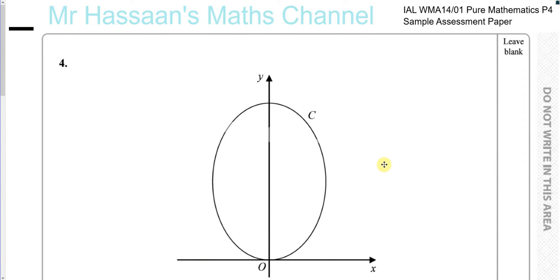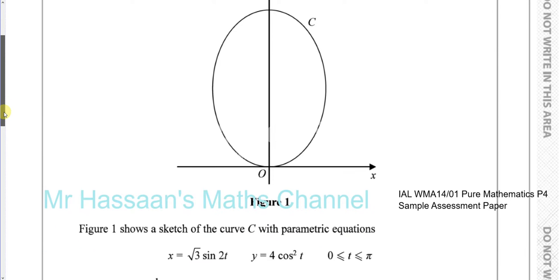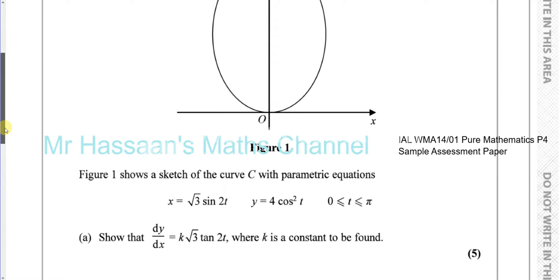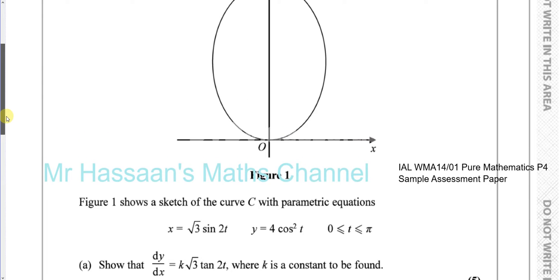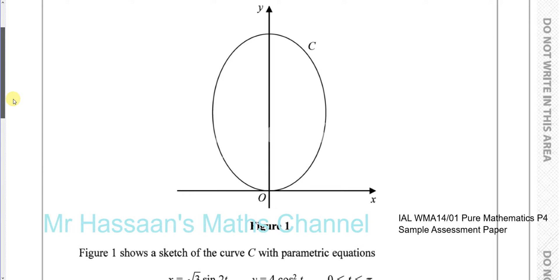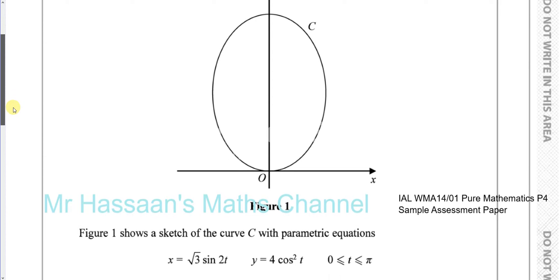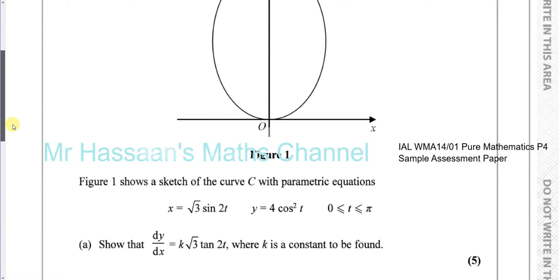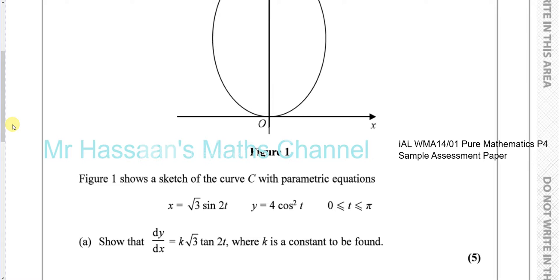Now for question number 4 from this P4 Pure Mathematics for International A-Level paper. Here we have a question about parametric equations. Figure 1 shows the sketch of the curve C with parametric equations x equals root 3 sine 2t and y equals 4 cosine squared t, for values of t between 0 and pi inclusive. We need to show that dy/dx equals k times root 3 tan 2t, where k is a constant to be found.